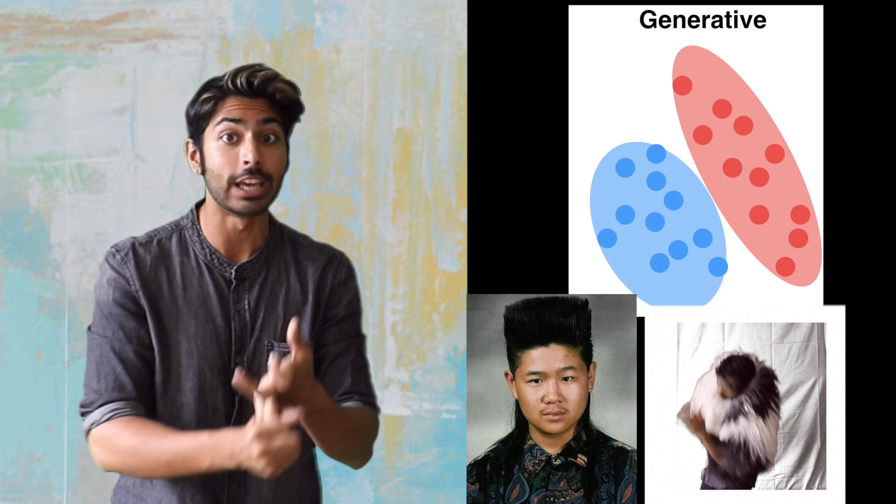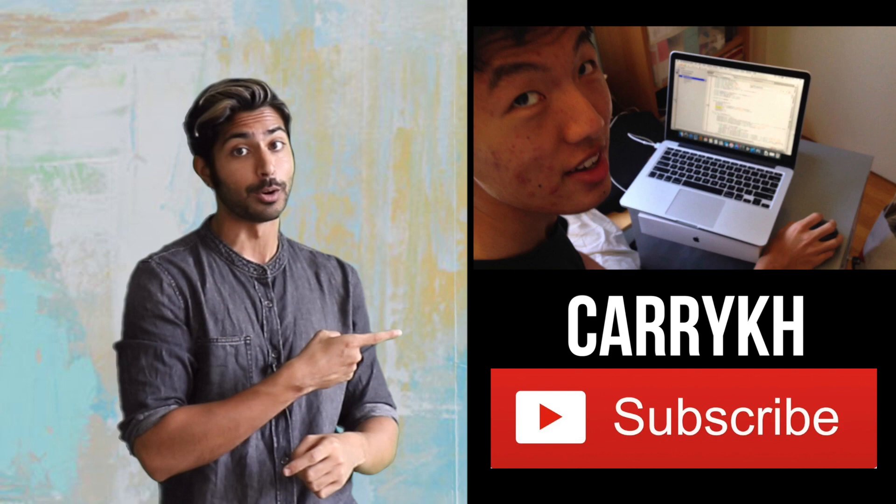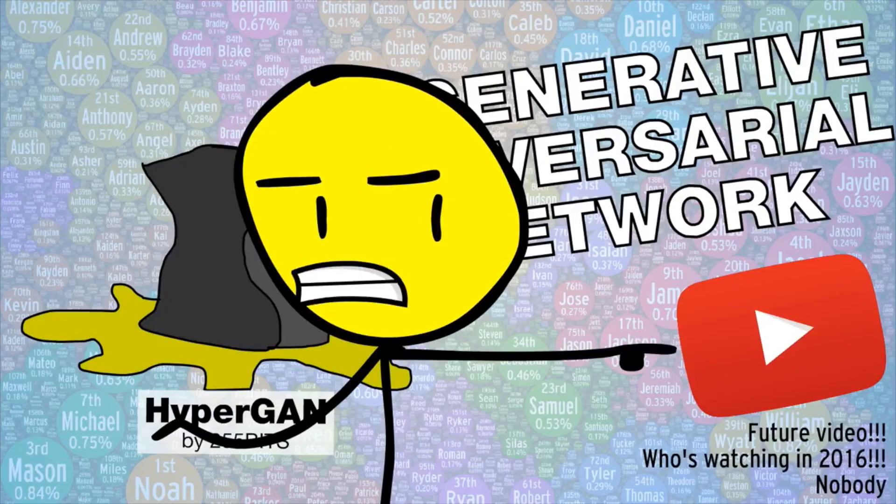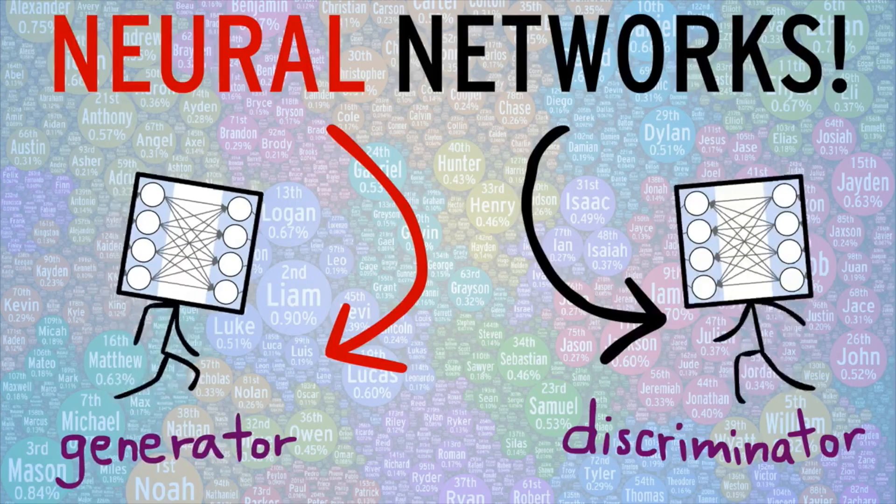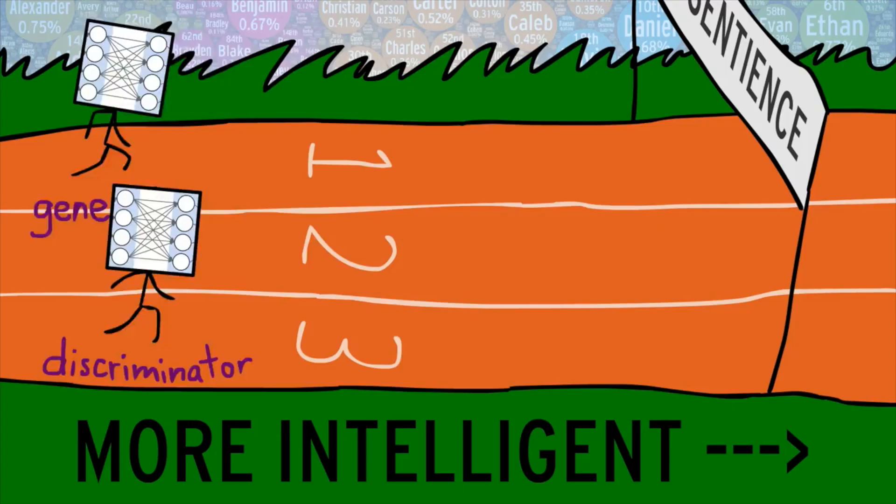Generative models are even more exciting — they generate new data: new images, new videos, new music, new text. For now just know that there are two neural nets, a generator and a discriminator, that are each co-evolving to outsmart the other.